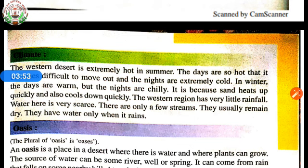The desert is land covered with sand, and sand absorbs heat very fast, so the days are very hot and it is very difficult to go out during daytime. At the same time, sand cools down very quickly, so the nights are cold. In winter, when we experience cold here, the days there are warm and the nights are chilly, because sand heats up and cools down quickly.